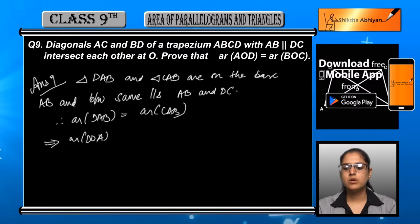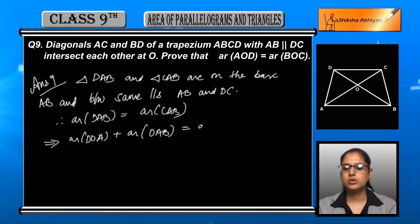Now DAB can be broken into DOA and OAB. So area of DOA plus area of OAB is equal to CAB.